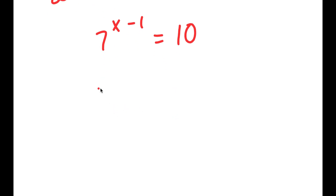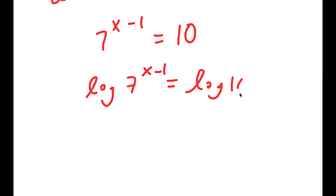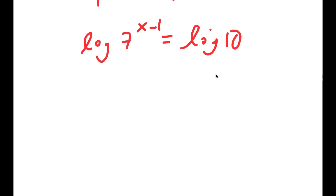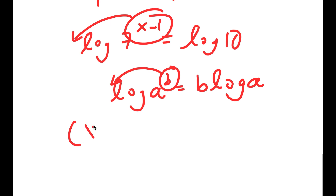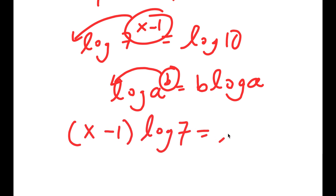Now I'm going to take the log on both sides, so I get log of 7 to the power of x minus 1 is equal to log of 10. If I have something in the form log a to the power of b, I can move the exponent b to the front, so it equals b times log a. So in this case, I have log 7 to the power of x minus 1, and I can move x minus 1 to the front, giving x minus 1 times log 7 is equal to log 10.